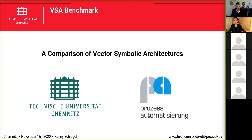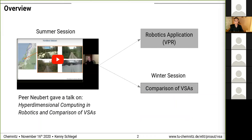Hello everyone, I'm Kenny and I'd like to give a talk about a comparison of vector symbolic architectures. I'm part of the professorship of process automatization at Chemnitz University of Technology, Germany. My colleague Per Neubart gave a talk in the last summer session of the VSA webinar series about hyperdimensional computing in robotics and the comparison of VSAs, focusing on the visual place recognition task. Today I'd like to take a closer look at the results of our comparison.